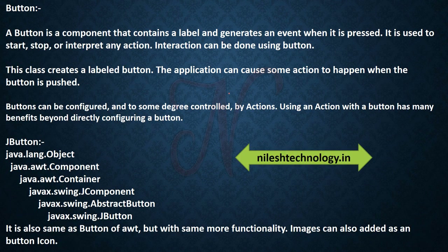Next is Button. A Button is a component that contains a label and generates an event when it is pressed. It is used to start, stop, or interrupt any action. The hierarchy of Button is the same as Component. JButton is the Swing equivalent and is used in Swing. We will see examples of Label and Button in the next video. If you have any queries, comment in the comment box, like and subscribe to this channel. See you in the next video, thank you.